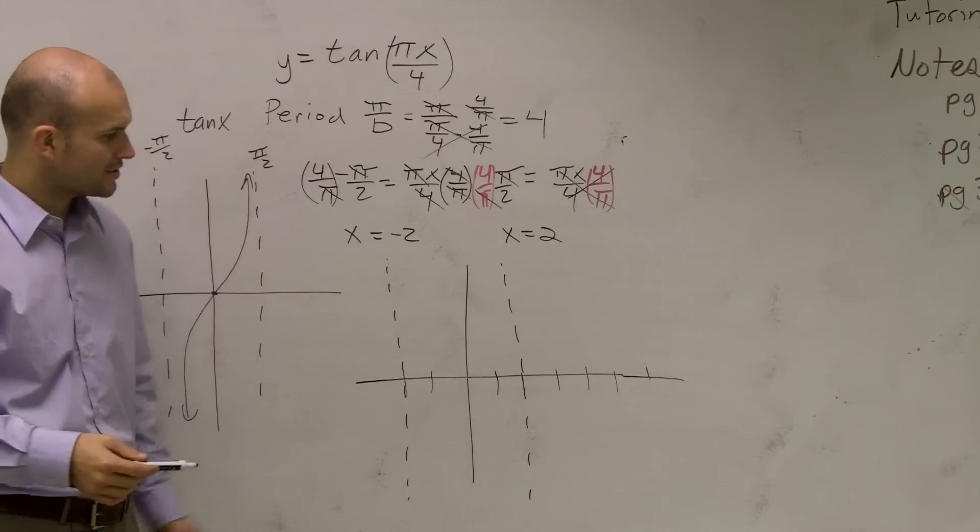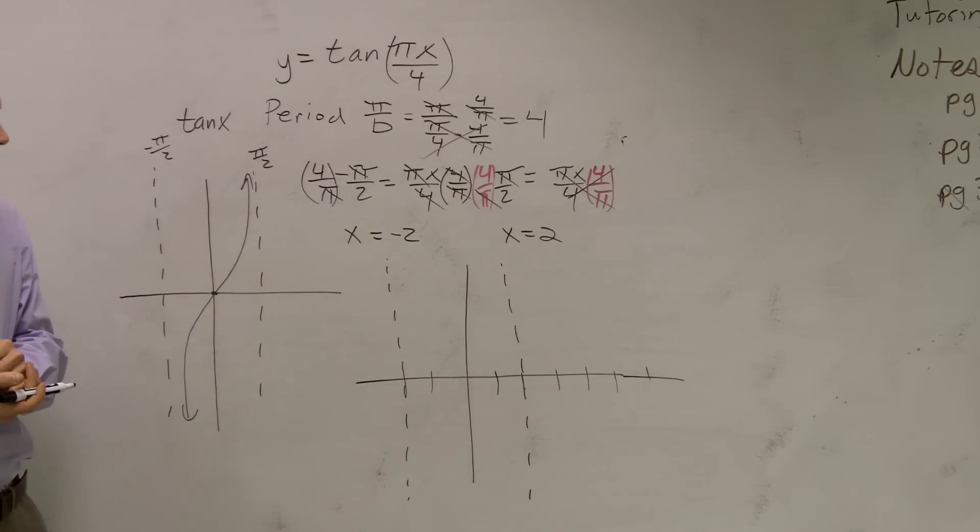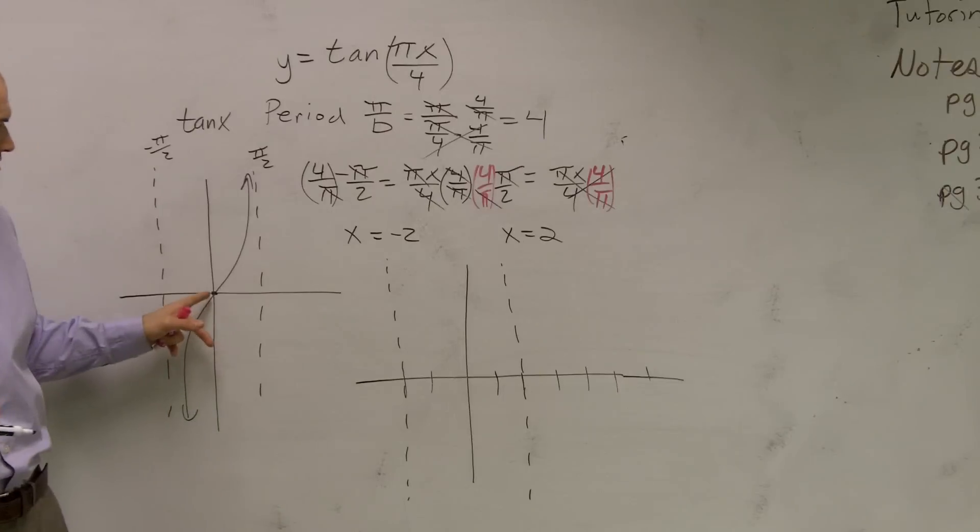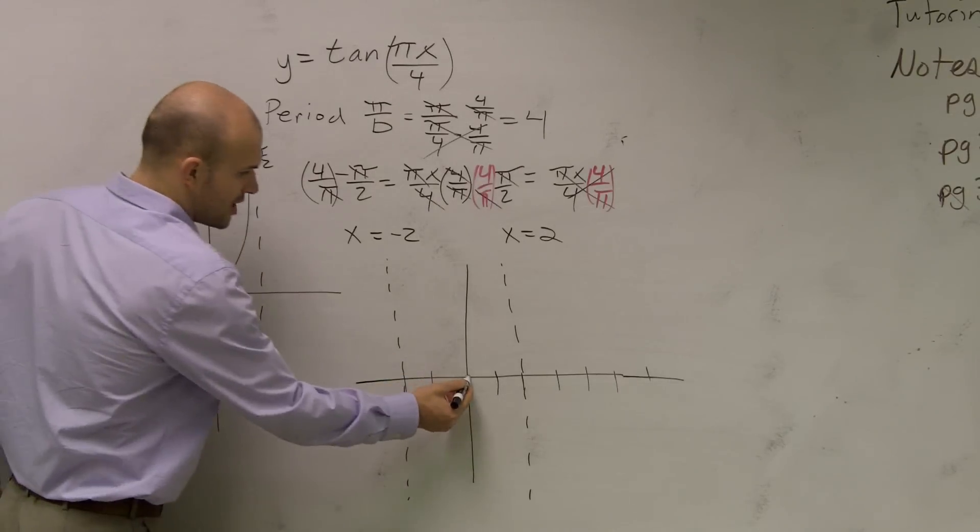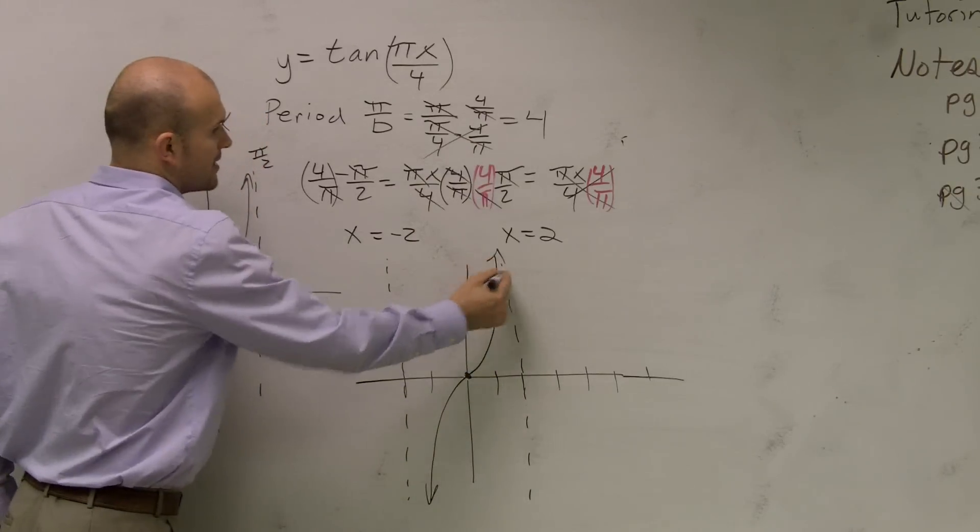My graph is going to go through there. The point where it crosses is right in the center, so it still crosses at (0,0). It looks something like that.